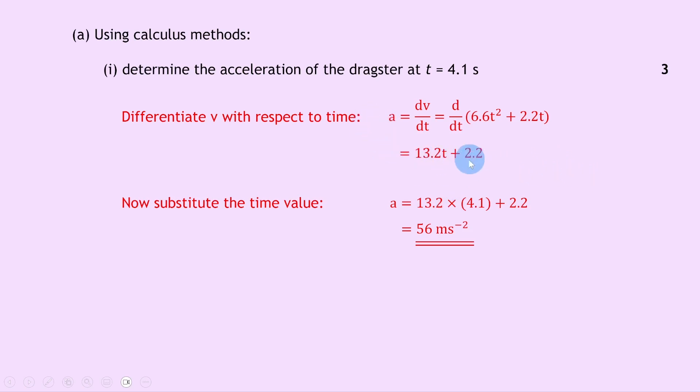For example, if you subbed in t equals 0, acceleration would start at 2.2 metres per second squared. At t equals 1 second, you would have a equals 13.2 plus 2.2, which would give you 15.4 metres per second squared. At t equals 2 seconds, you would have a equals 13.2 times 2 plus 2.2, which would give you 28.6 and so on. So the acceleration is going to keep increasing more and more.